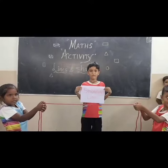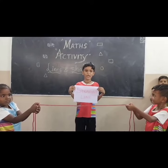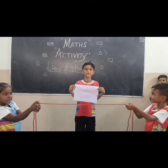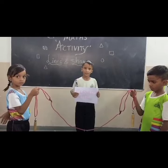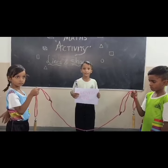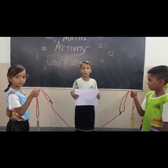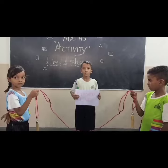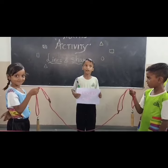When we hold the rope tightly, it is a straight line. When we hold the rope loosely, it is a curved line.